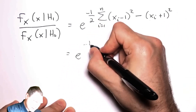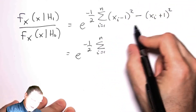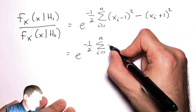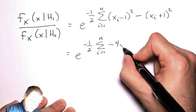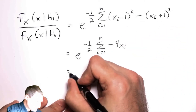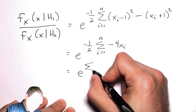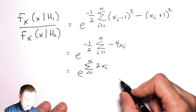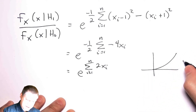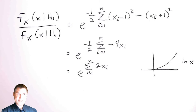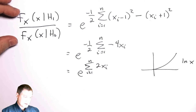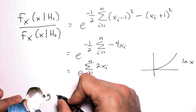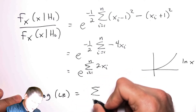I can simplify things. The x_i squared terms cancel, and after working through the algebra with the cross terms, I end up with e to the sum of 2x_i. Since the log function is monotonically increasing, maximizing the likelihood is the same as maximizing the log likelihood. So instead of thresholding the likelihood ratio directly, I can use the log likelihood ratio, which equals just the sum of my observed numbers.